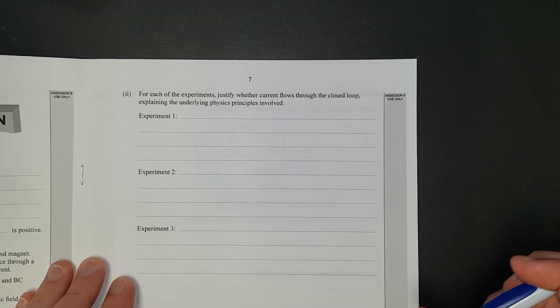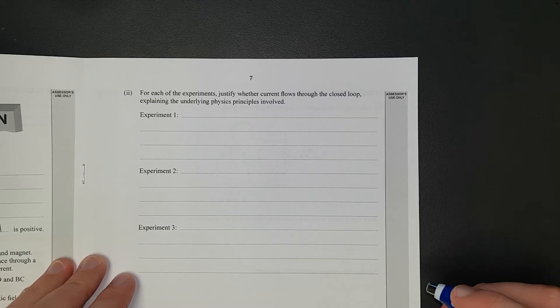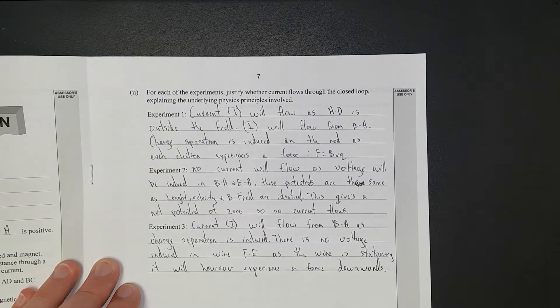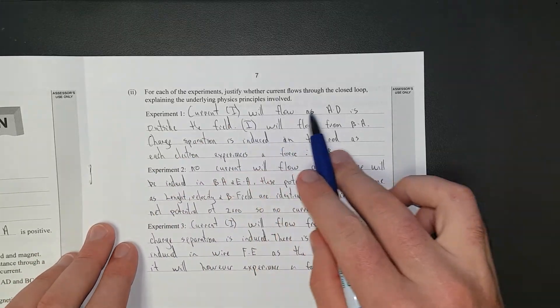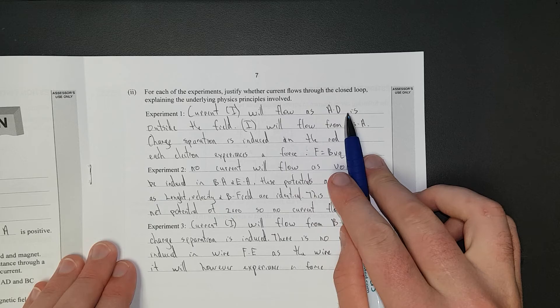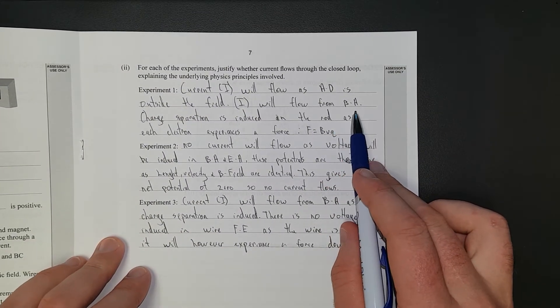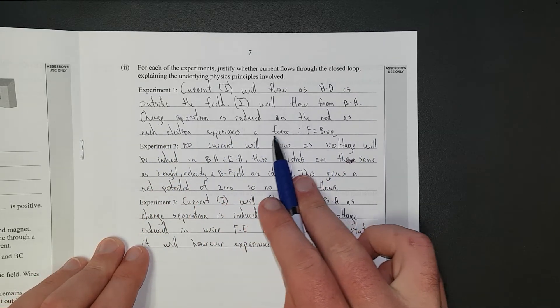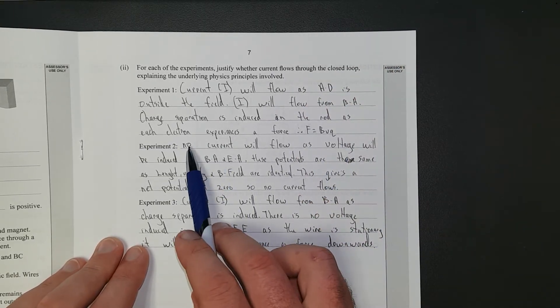So, for each of the experiments, justify where the current flows through the closed loop. Explain the underlying physics principles involved. Right, I'll pause it, write all the answers, and then discuss. Alright, so, for the first one, I've said current will flow as AD is outside the field. So, here's AD, it's outside the field, so current will flow, and I've said it flows from B to A, you can prove that to yourself later. Charge separation is induced in the end of the rod, as each electron experiences a force, F equals BVQ, and that's the force that it feels.